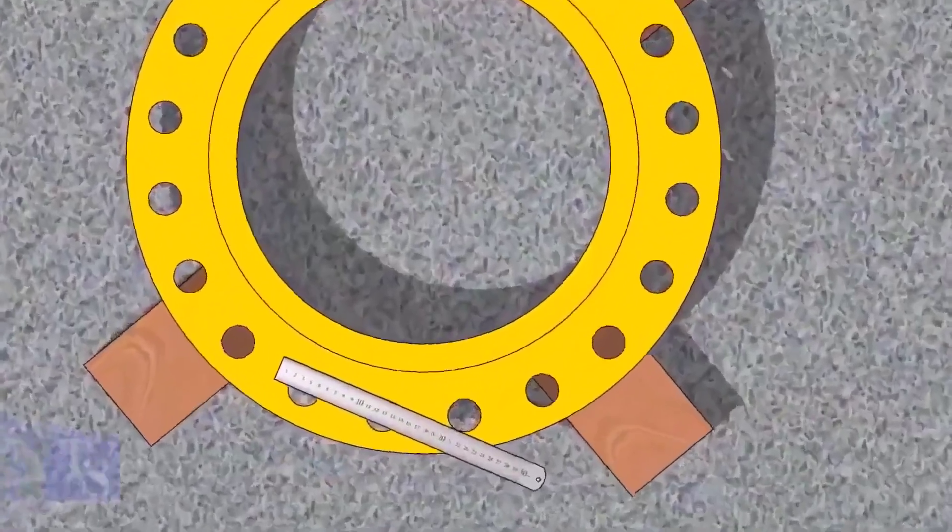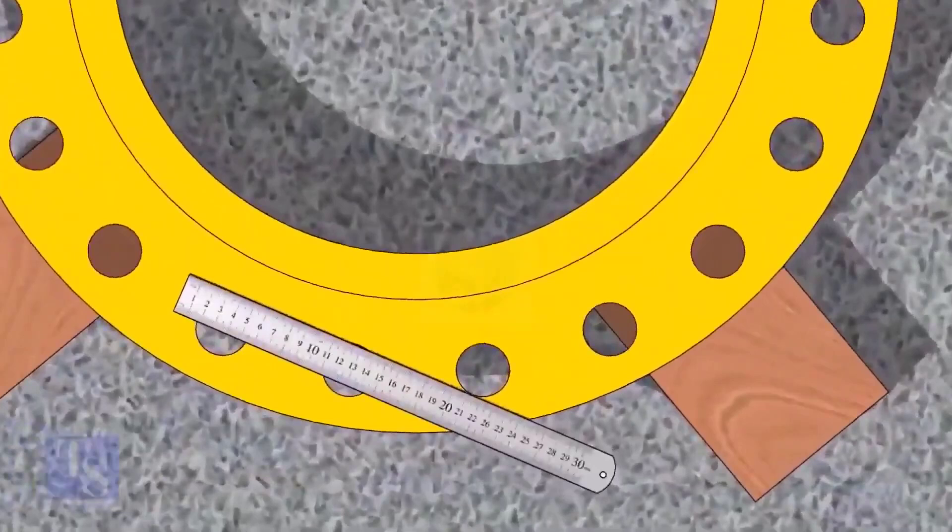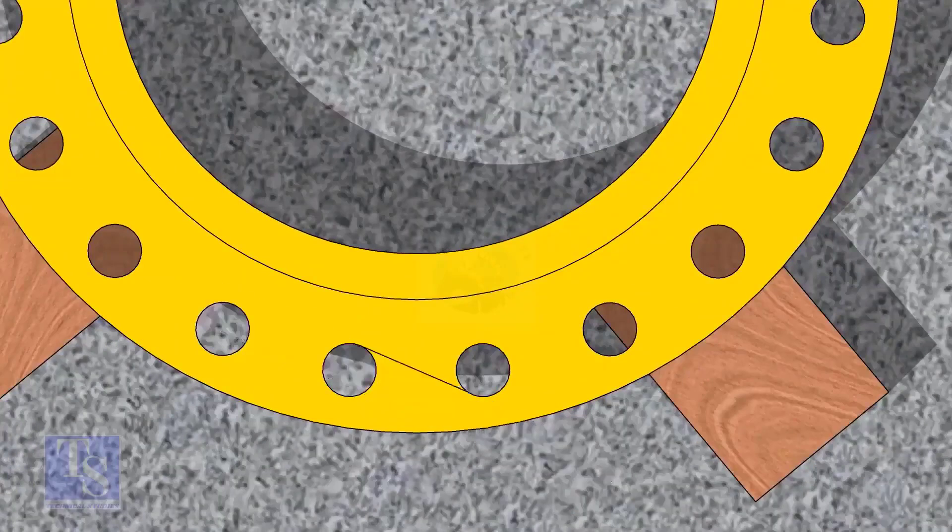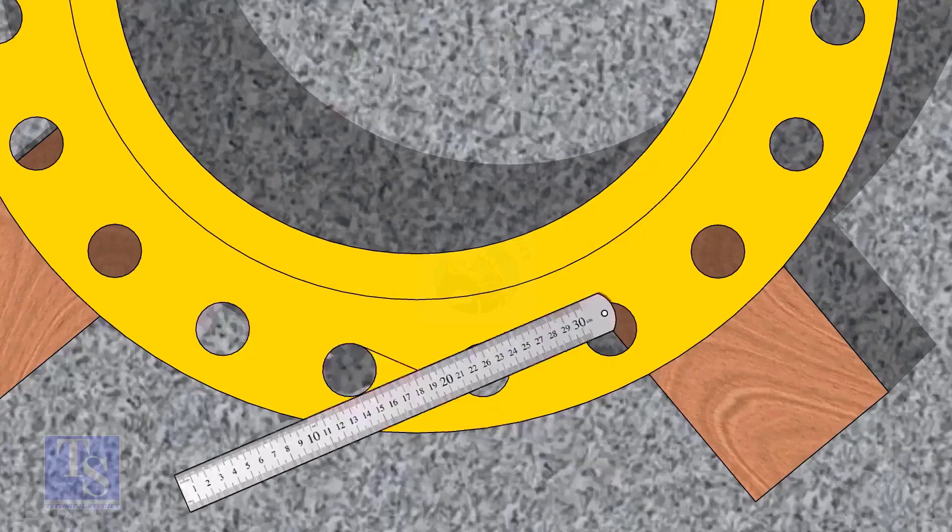Let us mark the center line of the flange. Draw tangential lines of two adjacent holes. The intersection of the lines is the center of these holes.